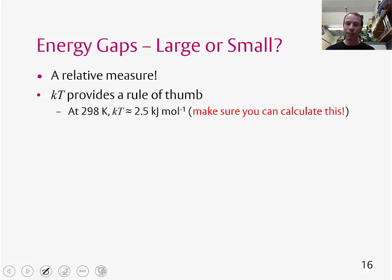If we're at 298 Kelvin, so effectively room temperature, KT is approximately equal to 2.5 kilojoules per mole. This is a key number to just remember, and it's also a number that you should be able to calculate. So make sure you can do this. Actually, you could pause the video now and try and do this.